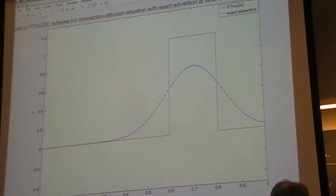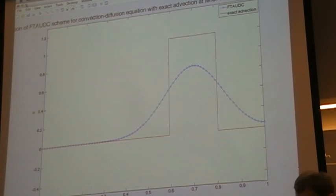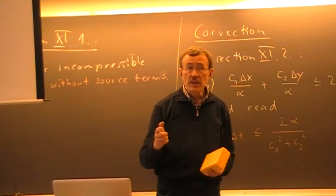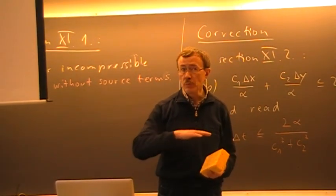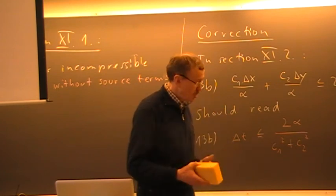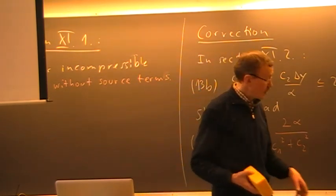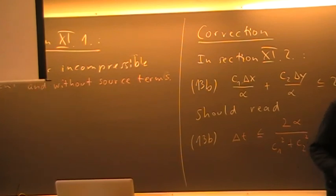There are many other schemes around. I just want to mention at least one. This was the upwind for the advection and centered for the diffusion. If we go back to the forward time-centered space, then we can do it implicitly instead of explicitly, and by that we will remove the stability condition, so we'll have an unconditionally stable scheme — and that is an option.